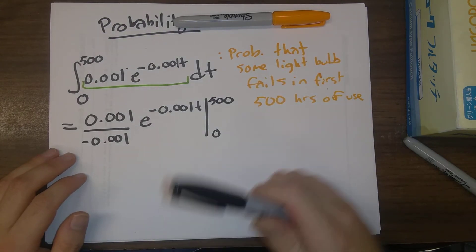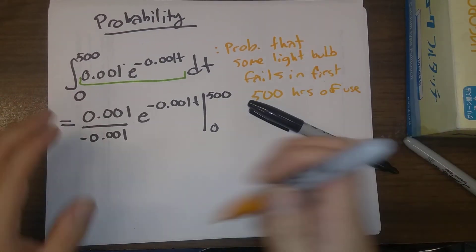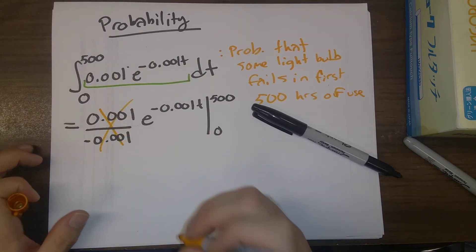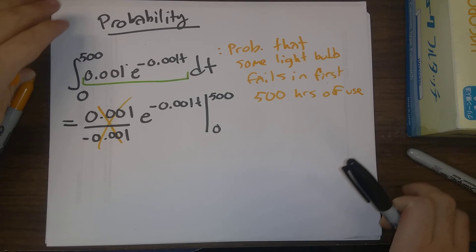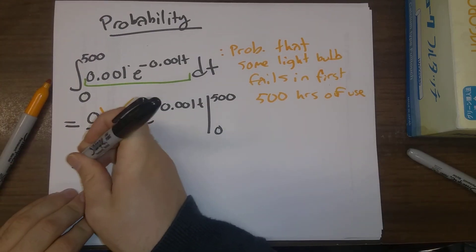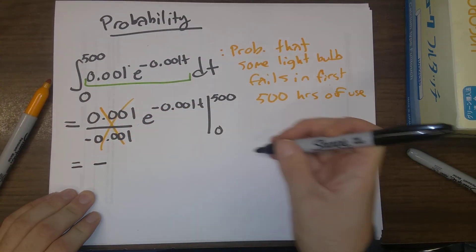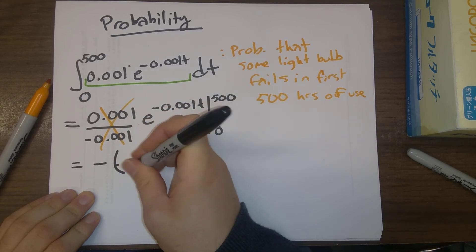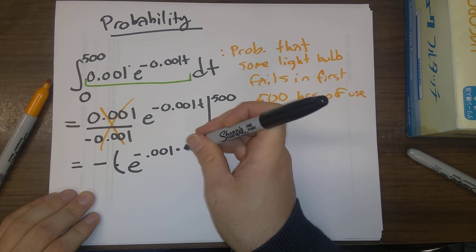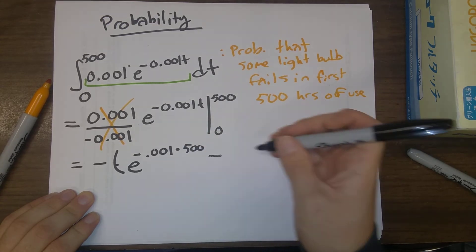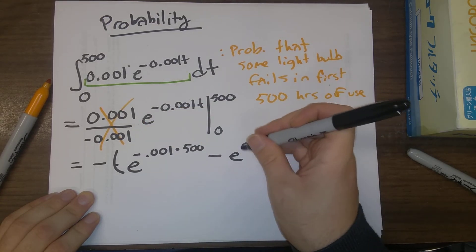We evaluate this at 500 and 0. Those are going to cancel out and just leave us with a factor of minus 1. So we're going to end up with e to the minus 0.001 times 500 minus e to the 0.